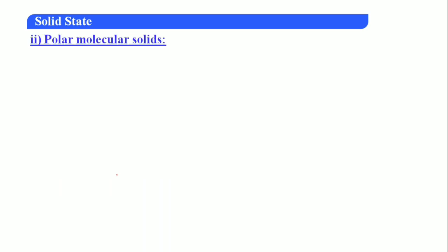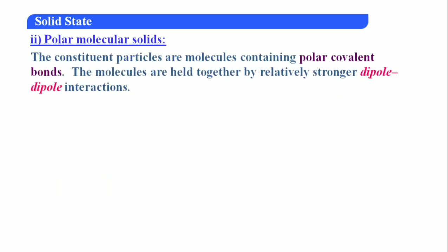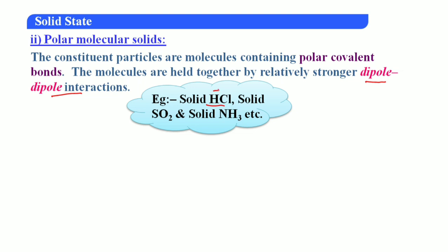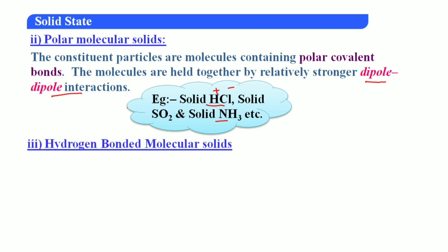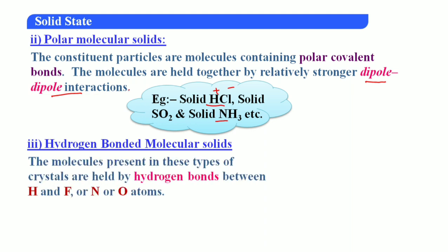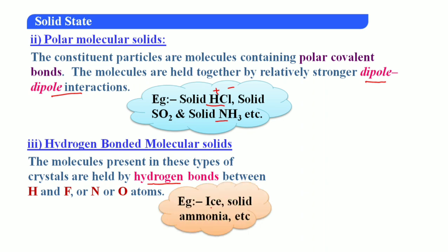Second, polar molecular solids — there is charge separation here. A strong dipole-dipole interaction is present. Examples include solid HCl, solid SO₂, solid NH₃ — in all these cases there is charge separation, hence we call them polar molecular solids. Third, hydrogen-bonded molecular solids — hydrogen bonds are present between molecules, specifically between hydrogen and fluorine, nitrogen, or oxygen atoms. Examples include ice (H₂O) and solid ammonia.